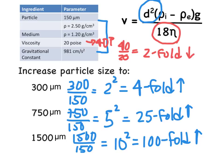If instead we decrease the viscosity — say we go to 10 poise — that would give us a two-fold increase in the rate of particle settling, since we'd be dividing by 0.5, which gives a two-fold increase.